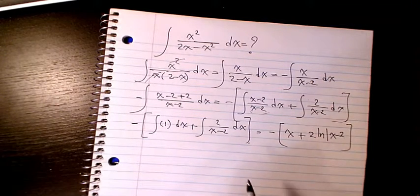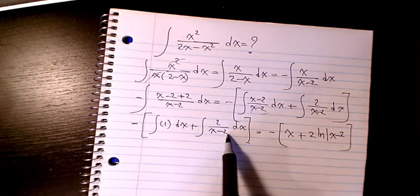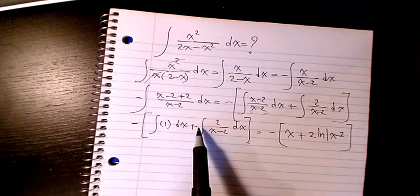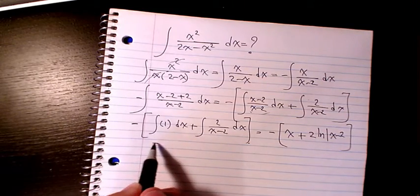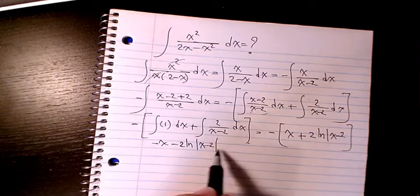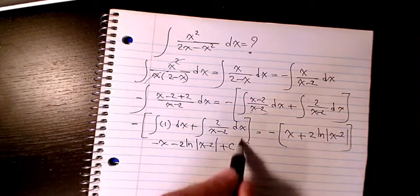Because the derivative of (x - 2) is just 1, and the 2 is going to sit as a coefficient. So it's going to be negative x plus 2 log (x - 2) plus C. That's the final answer to this question.